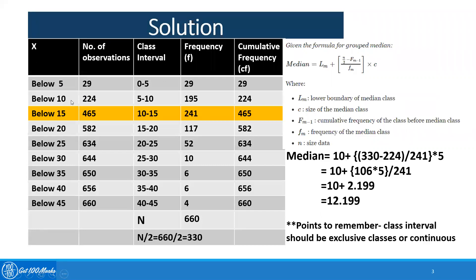Let me explain why we are doing it this way. Because the number of observations which are below 10 includes the observations which are below 5. That means 224 includes 29 observations. So within only the class limit of 5 to 10, the number of cases are 224 minus 29, which is 195. Following the same procedure, the class interval 10 to 15 will have 465 minus 195, which gives 241. Similarly, the next class interval 15 to 20 frequency will be 582 minus the previous cumulative frequency.